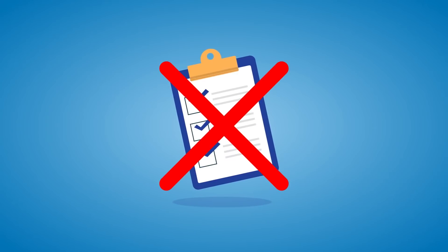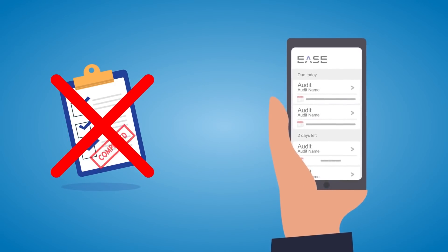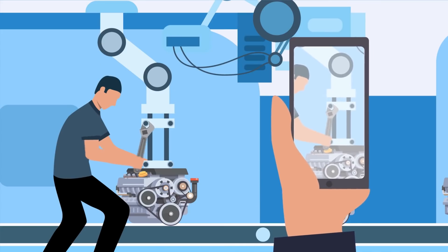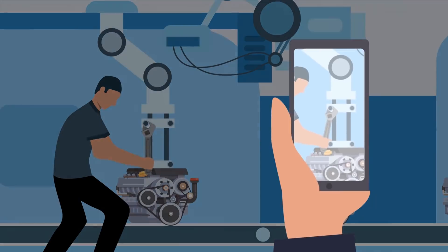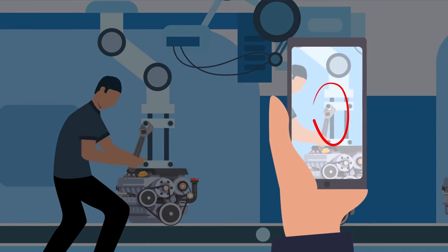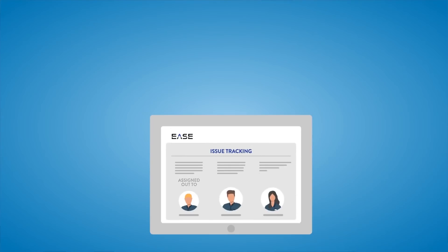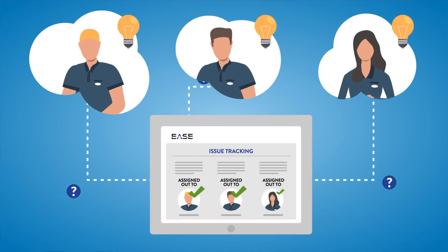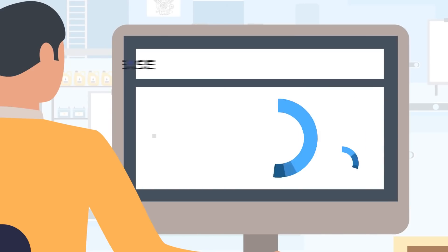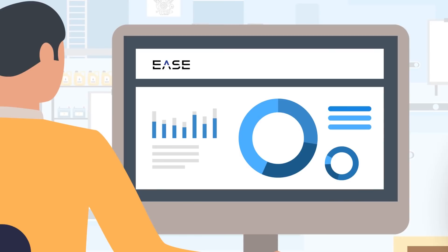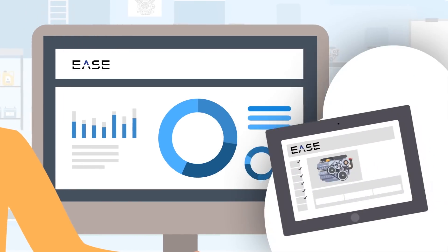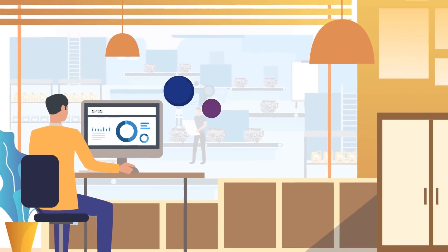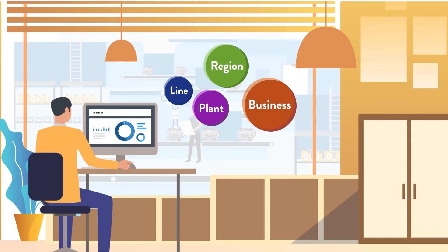Forget checklists and let the Ease mobile app guide your audits, including responses to non-conformances and annotated photos to capture evidence. With issue tracking, assign issues to appropriate parties and ensure they're closed out. Interactive dashboards and customizable reports provide real-time audit results and insights by line, plant, region, or business unit.